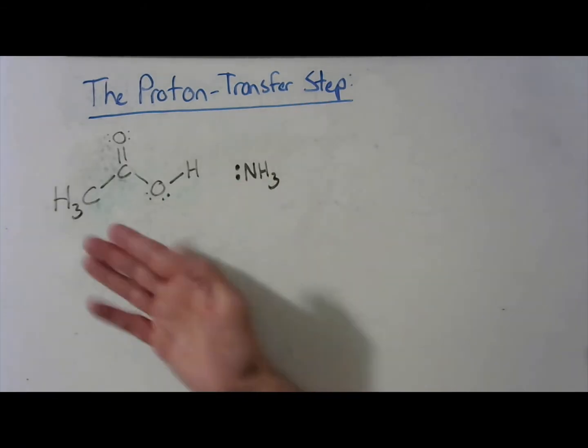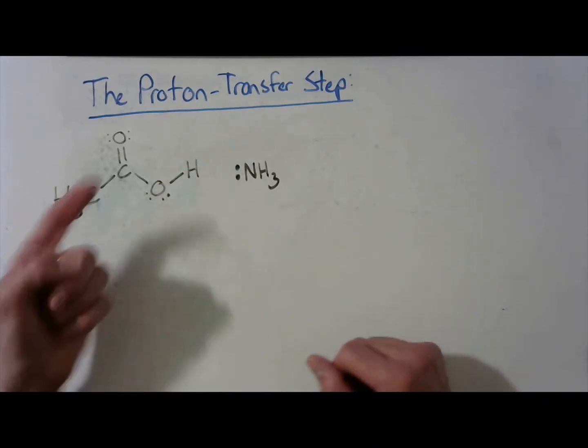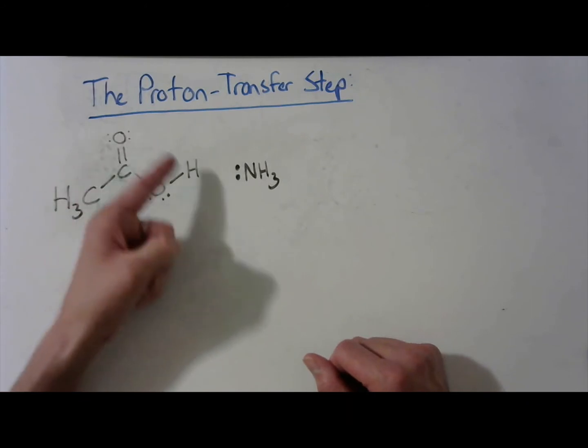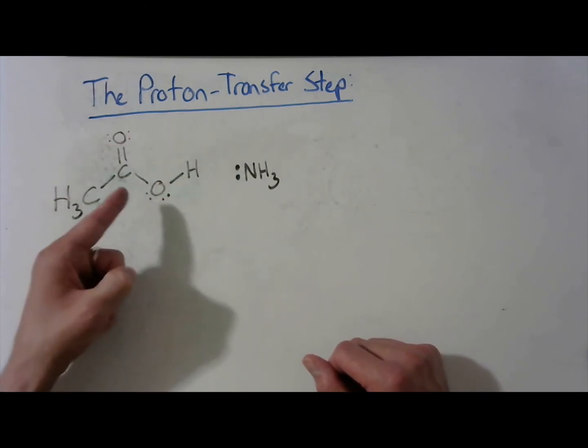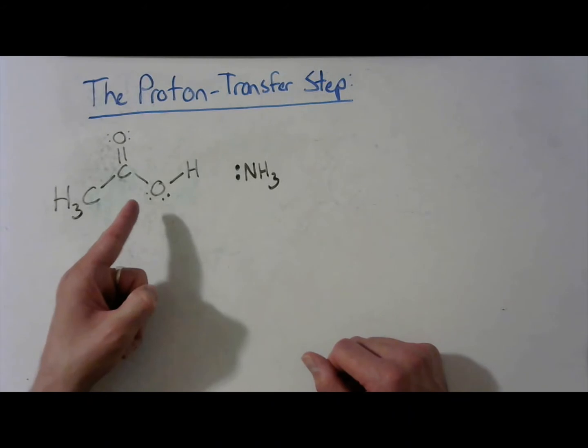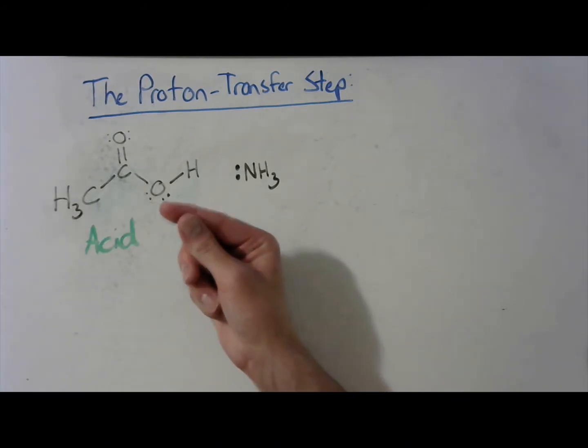Here we have our two reactants, acetic acid and ammonia. Acetic acid, notice, has a carboxylic acid functional group. So this is going to serve as our acid. And ammonia here is going to serve as our base.